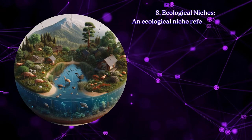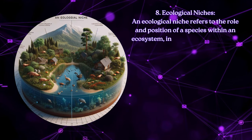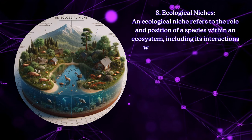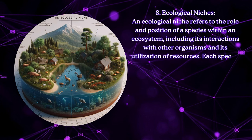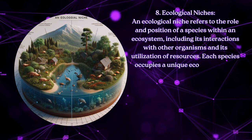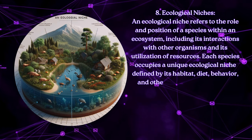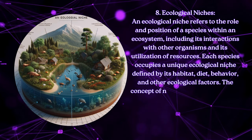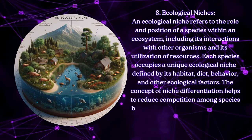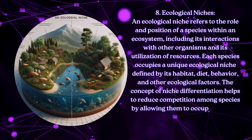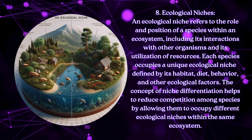Ecological niches: An ecological niche refers to the role and position of a species within an ecosystem, including its interactions with other organisms and its utilization of resources. Each species occupies a unique ecological niche defined by its habitat, diet, behavior, and other ecological factors. The concept of niche differentiation helps to reduce competition among species by allowing them to occupy different ecological niches within the same ecosystem.